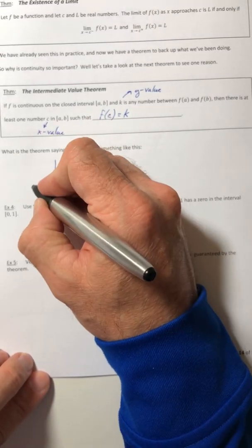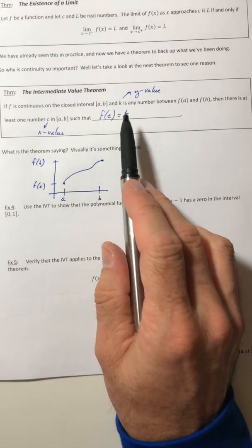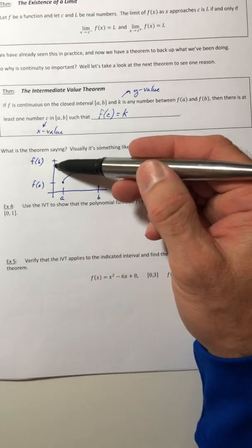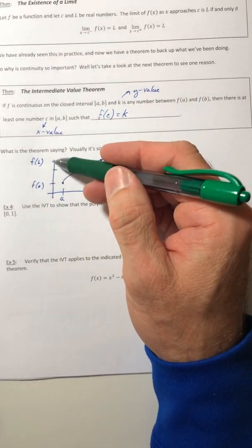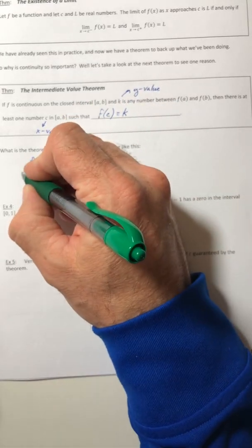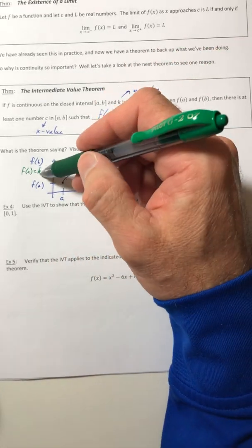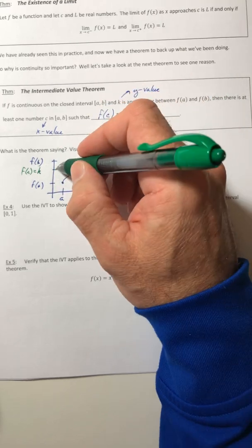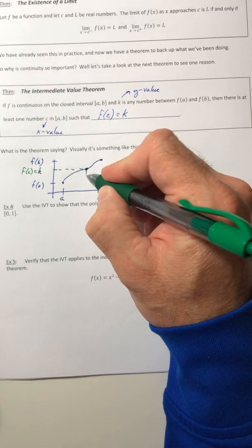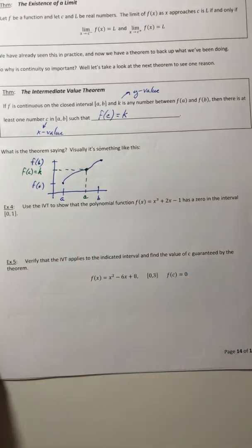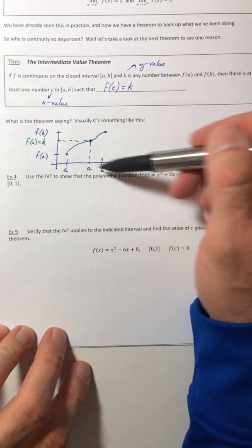So it's saying that, alright, you've got f(a), and you also have f(b). So this k value, if it's somewhere in there, somewhere in between them, so let's just say it's there. It doesn't have to be right in the middle, as long as it's in between them somewhere. So that f(c), that's the k, remember? So it's saying if the k, or that f(c), is in between f(a) and f(b), then the c value has to be in between a and b. So if the y is in between them, then the x value would be in between them.